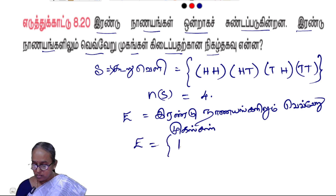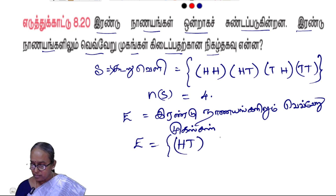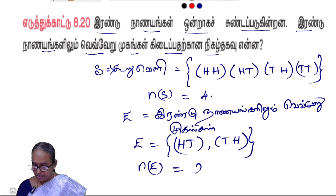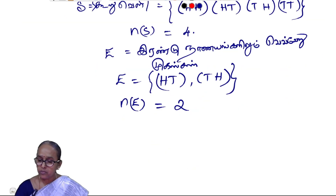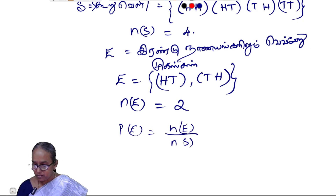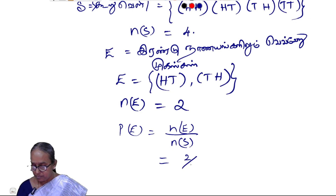E is equal to — so, n of E is equal to 2, 2 chances. P of E is equal to n of E by n of S. That is equal to 2 by 4.